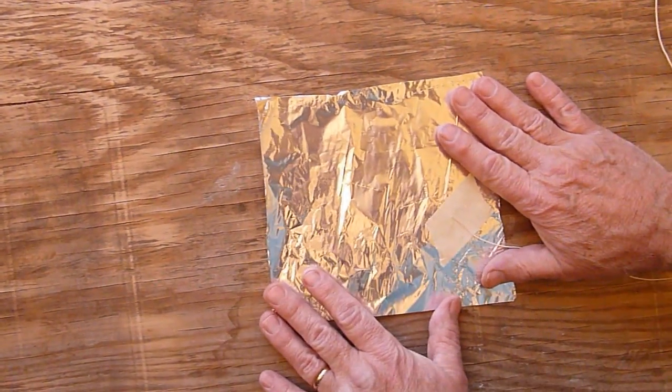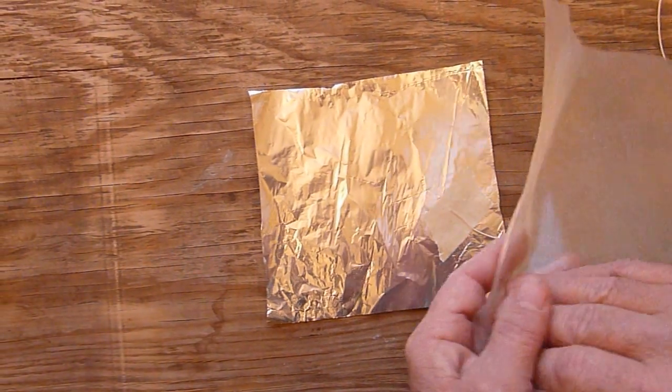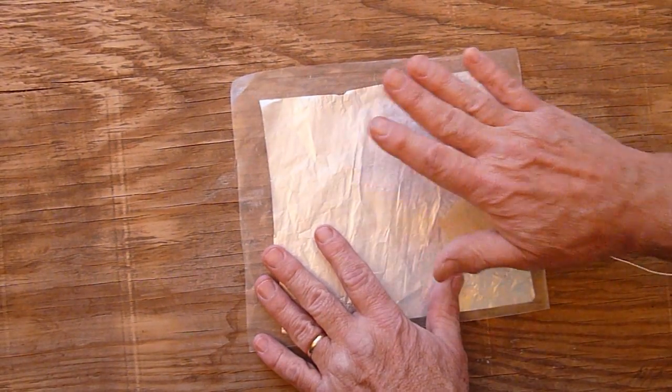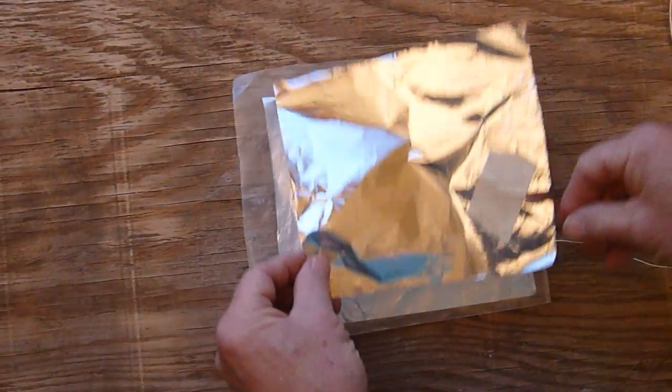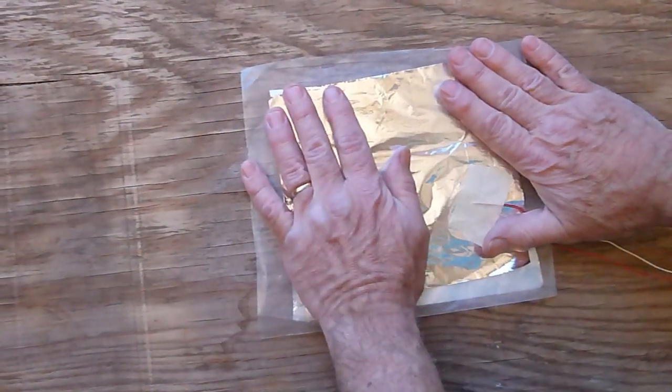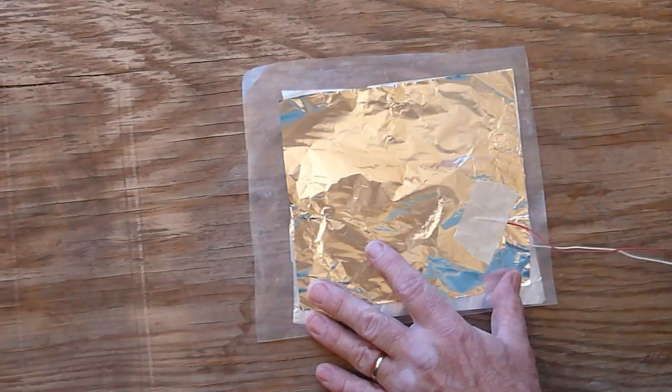We now show how to make a simple capacitor. First, we put a sheet of aluminum foil down that has a wire taped to it. Then, as an insulating layer, we use a piece of waxed paper. This is also called the capacitor's dielectric. Then, we put a piece of aluminum foil on which has another wire taped to it. This is our capacitor, and the two wires are the leads for this capacitor.